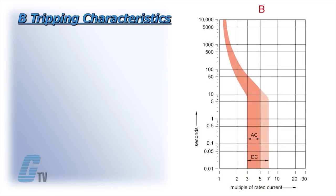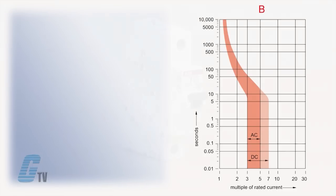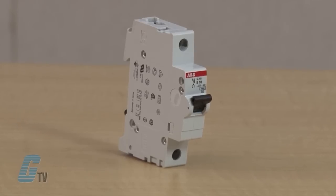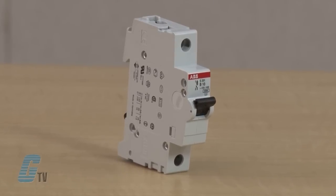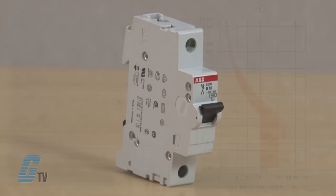The B tripping characteristics are available in breakers rated from 6 through 63 amps. The B time current curve is designed primarily for use in cable protection applications. Instantaneous tripping occurs between approximately 3 to 5 times rated current in 50 or 60 Hz systems. This quick trip curve maximizes protection of control circuits under low short circuit fault levels that could damage control wiring.